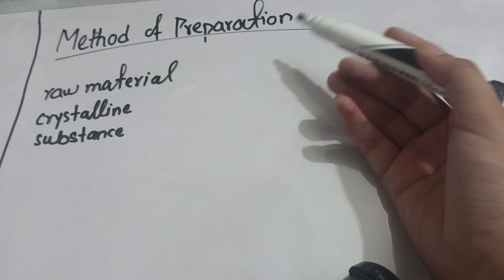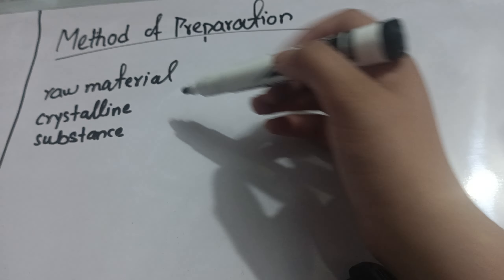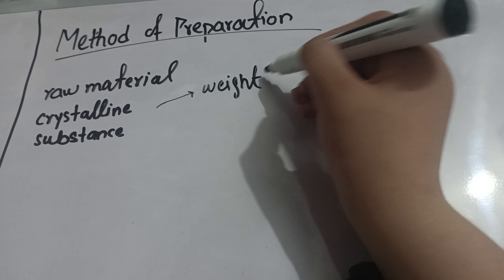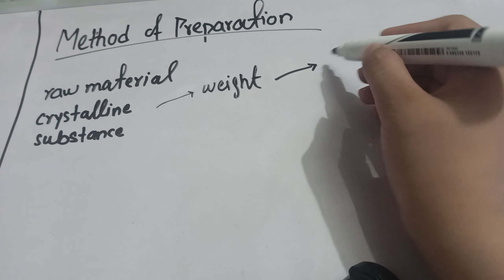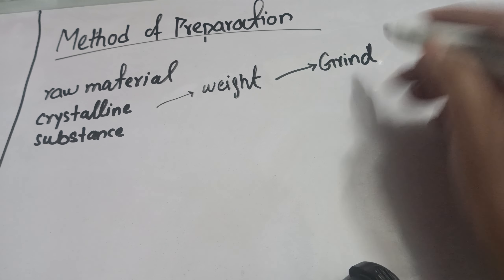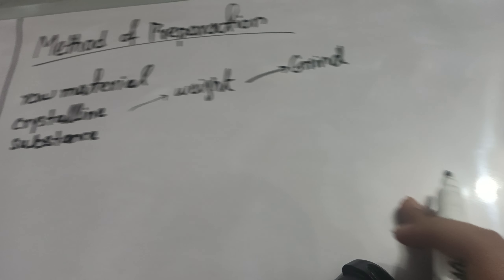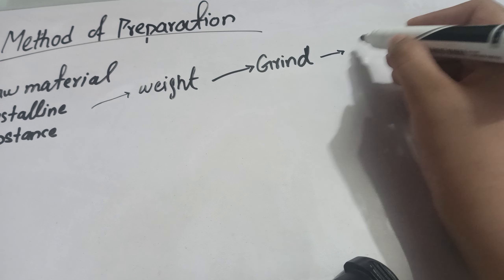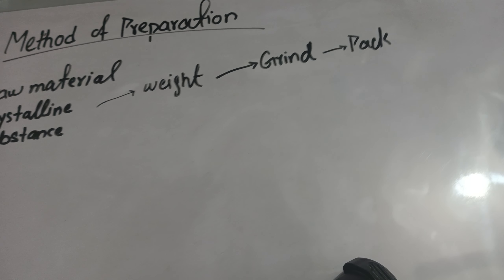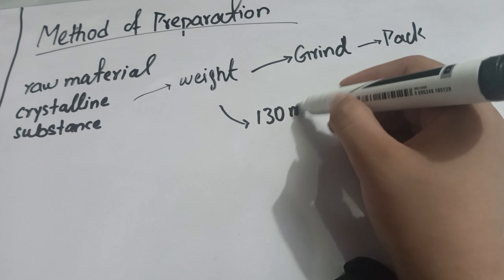Now we are going to discuss the method of preparation of powders. They are very easy to prepare. First you take the raw material, which will be in the form of a crystalline substance. You weigh a specific amount of it, and after weighing you grind it in a pestle and mortar to convert it into powder form. After grinding, the powder is obtained, then you pack it and dispense it to the patient.